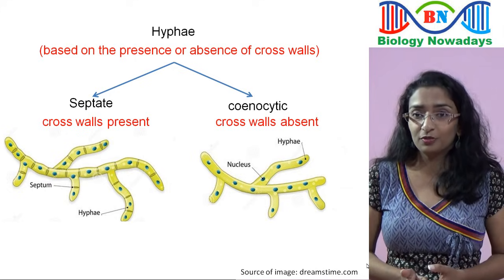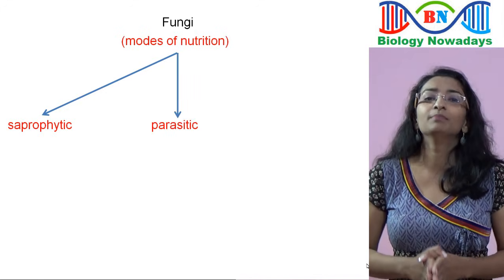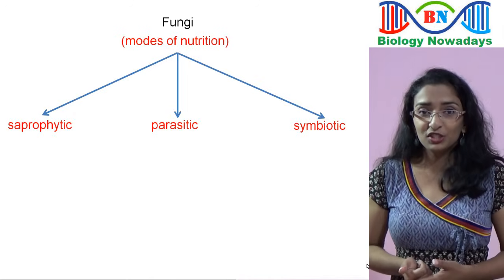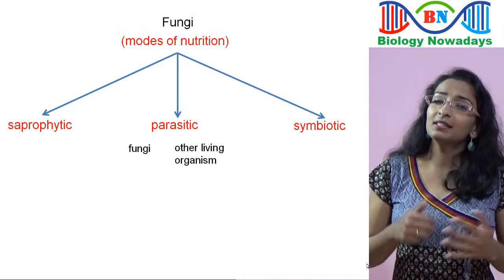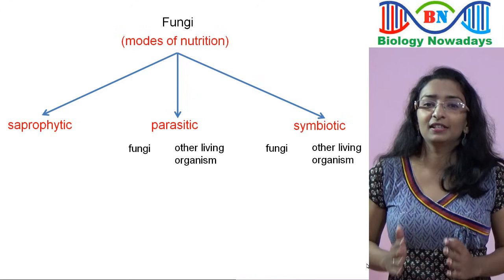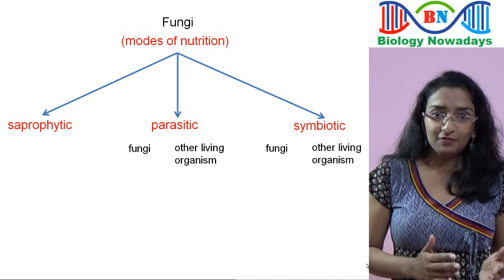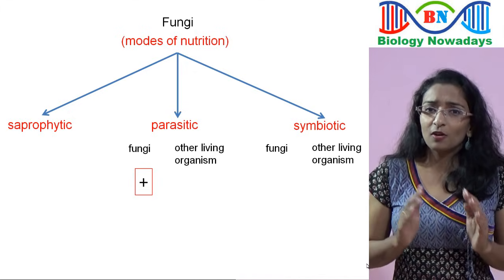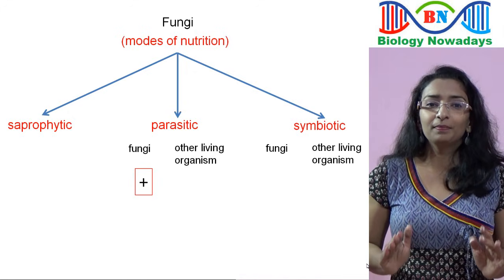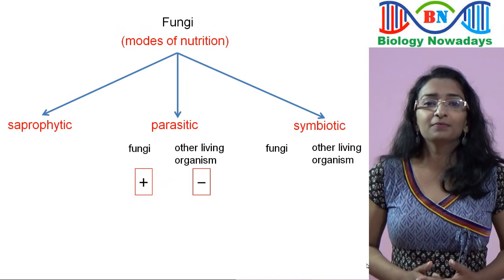On the basis of modes of nutrition, fungi are divided into saprophytic, parasitic, and symbiotic. Saprophytic fungi feed on dead organic matter. Parasitic fungi depend on other living organisms. In the case of parasitic fungi, only the fungus gets the benefit, while the host — for example, a plant or animal — gets some diseases and thereby suffers negative effects. But in the case of symbiotic fungi, both the fungus and the other living organism benefit.